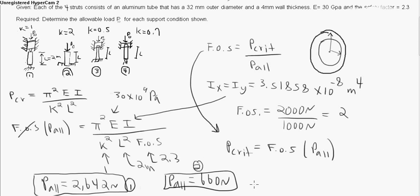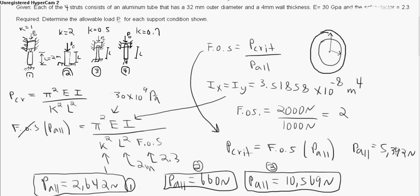For our third condition, we get 10,569 newtons. And for our fourth condition, we get 5,392 newtons.